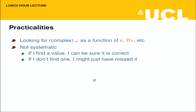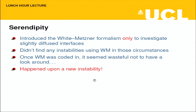I don't have a systematic way of finding an eigenvalue — I find one by hook or by crook, and then I change parameters a little bit at a time, tracking it through parameter space. This means if I don't find an instability, it doesn't mean there isn't one — I may just not be looking in the right place. But if I've found one, I've found one.